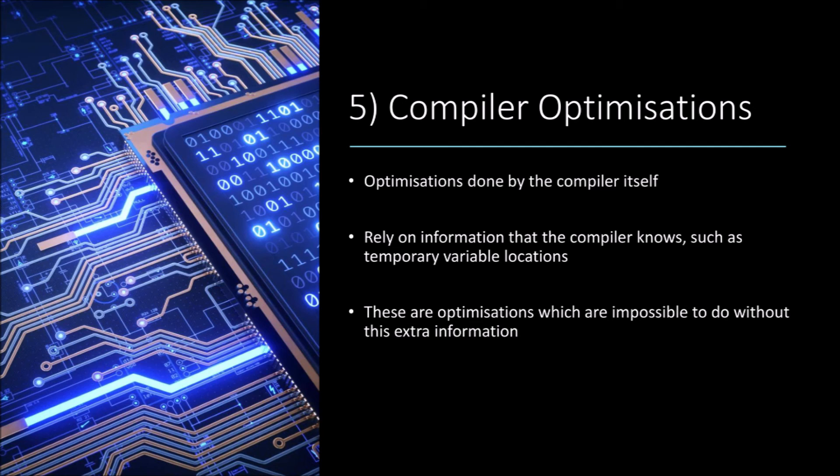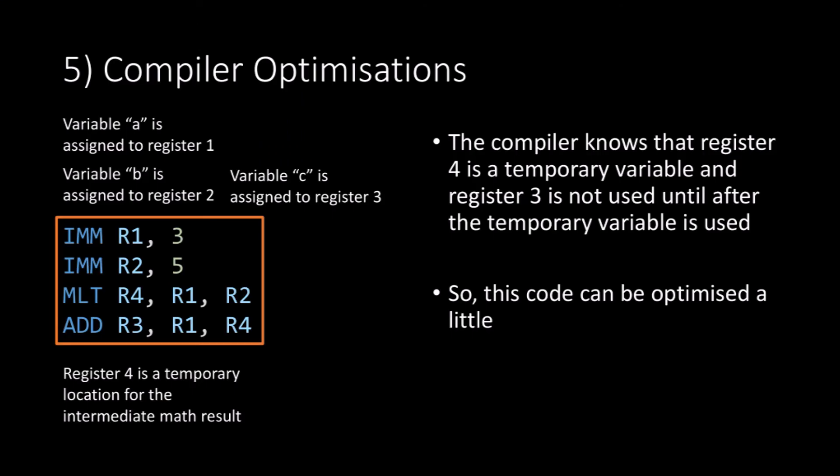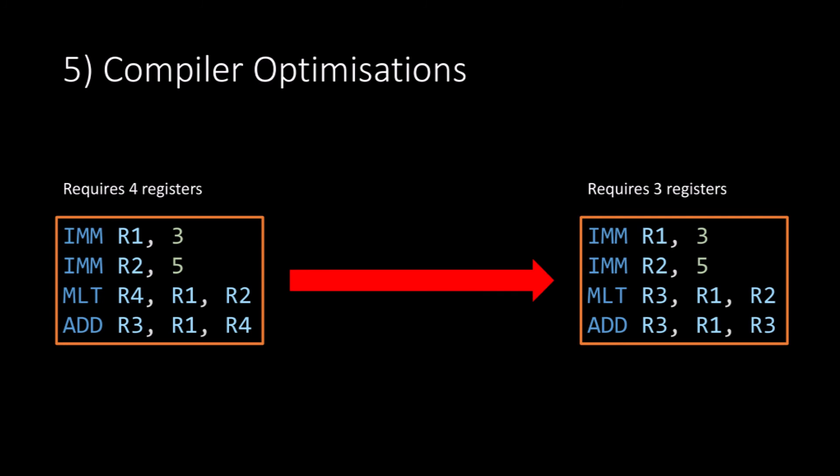Next we have the compiler optimizations. These are optimizations done by the compiler itself, and these rely upon information that only the compiler knows, such as the location of the variables and the temporary variables. Without this information, none of these optimizations would be possible. If we look at our code, the compiler knows that register 4 is a temporary variable, and it also knows that register 3 is not being used until after the temporary variable is used. So the code can be optimized by taking register 4 and turning it into register 3, since when register 4 is being used, register 3 is not being used. This means our code previously required four registers but now only requires three.